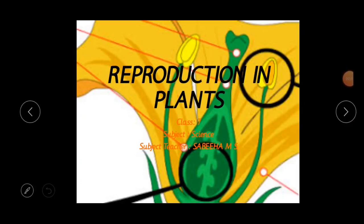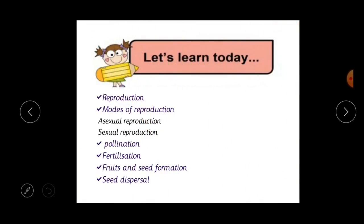Hello children, welcome back to my class. Today we are going to start a new lesson of science — reproduction in plants. Every living organism goes through the cycle of birth, growth and death. However, all living organisms die after a certain period, so how is our earth still full of a variety of living organisms? In this lesson we are going to deal with reproduction, modes of reproduction, and types of reproduction.